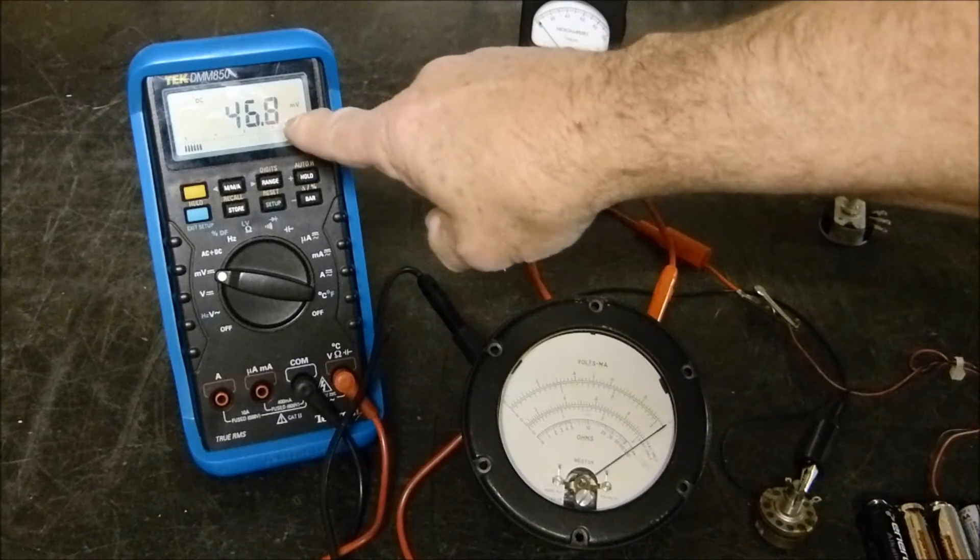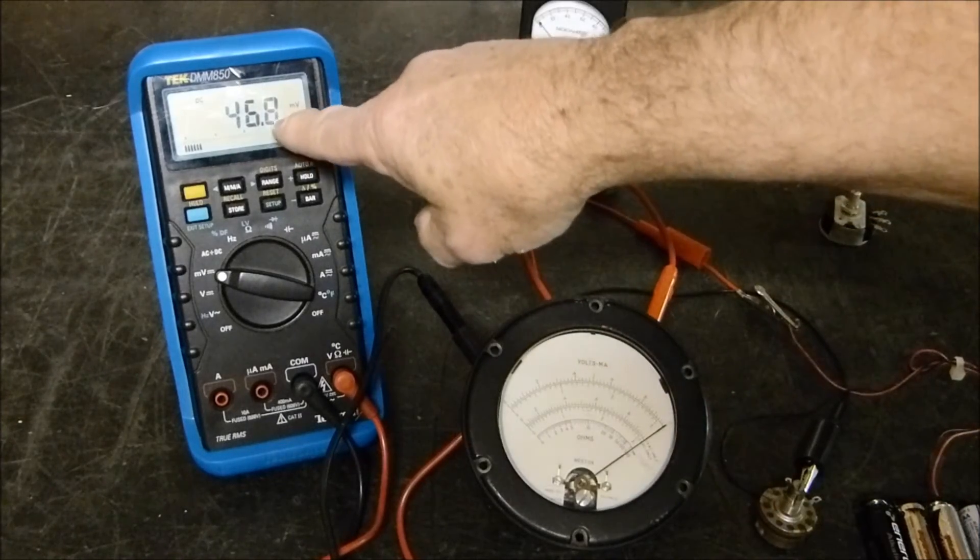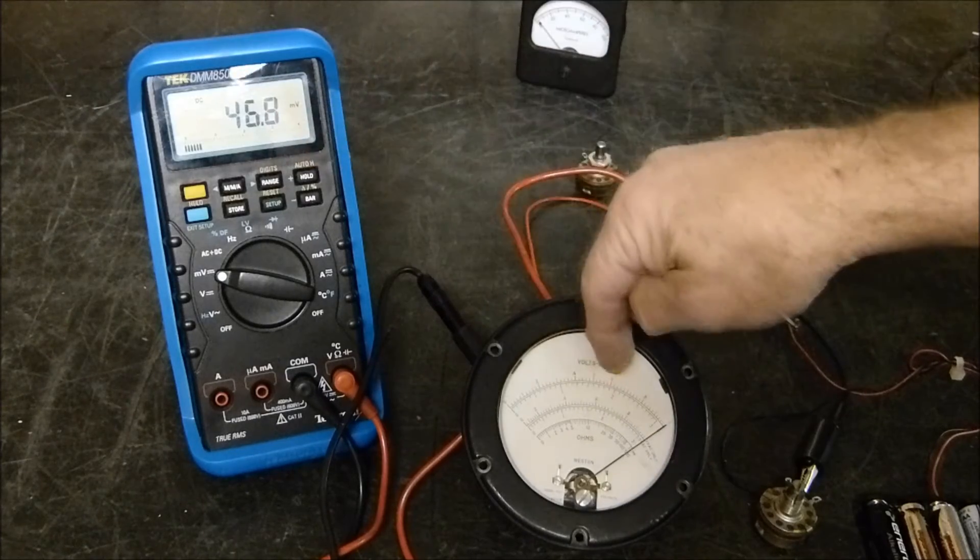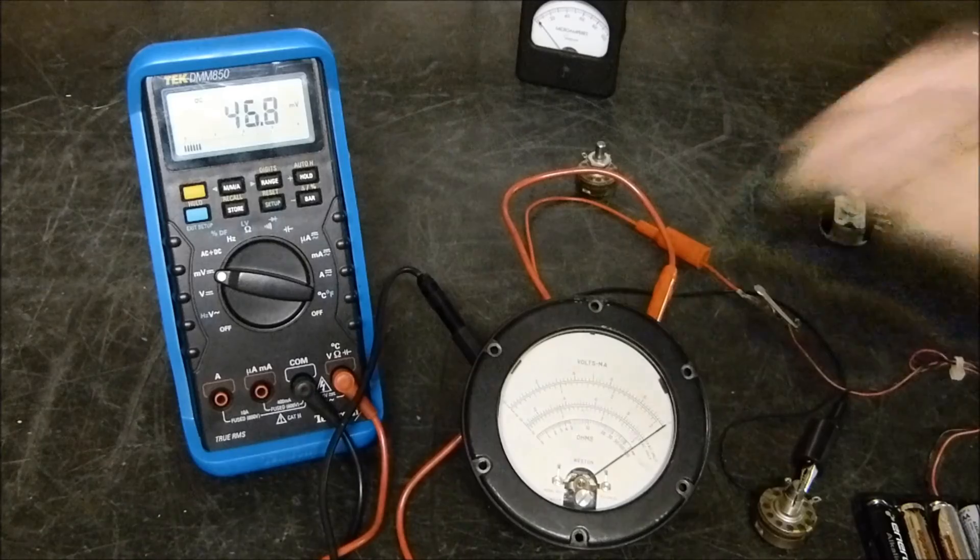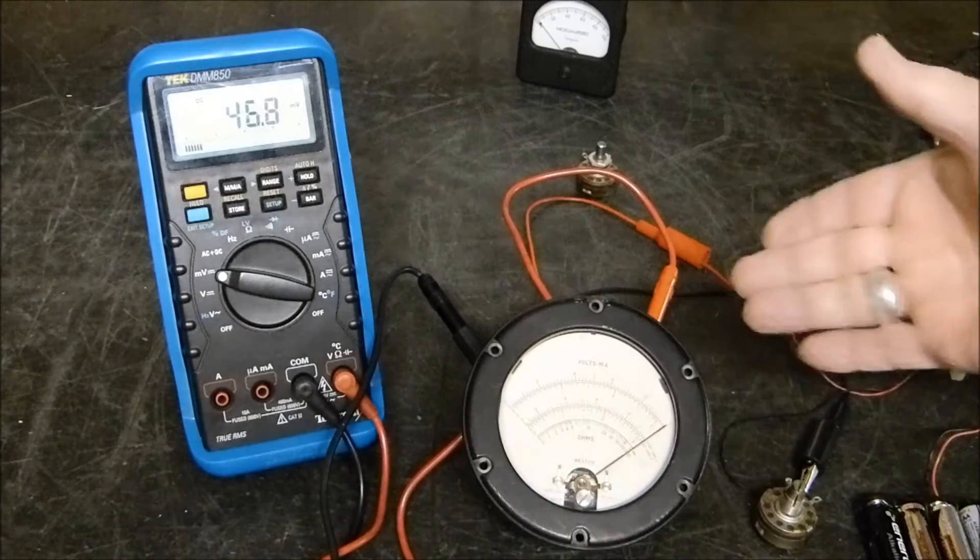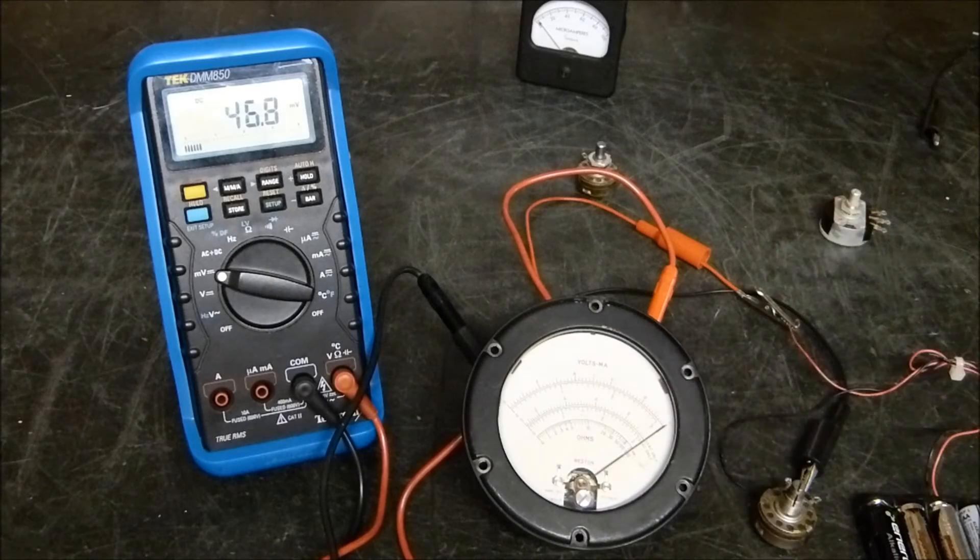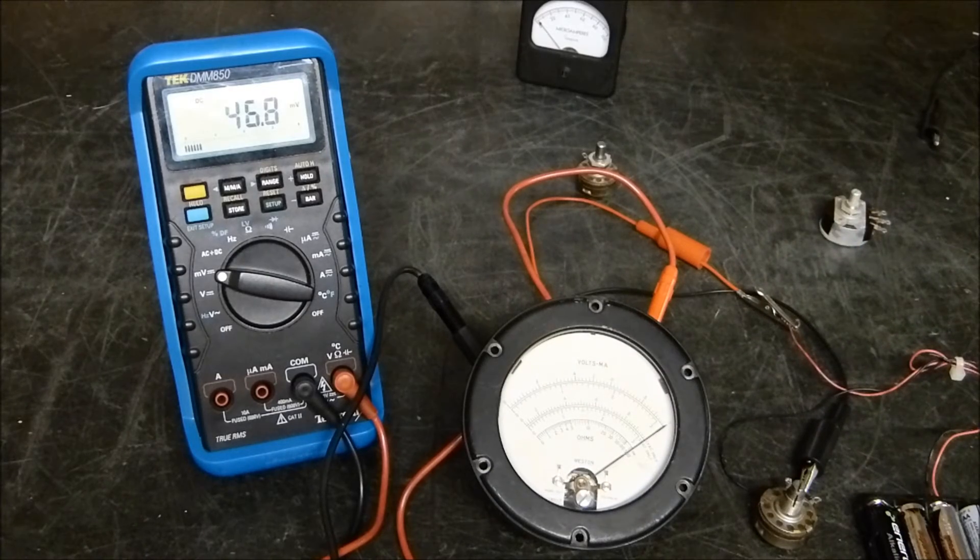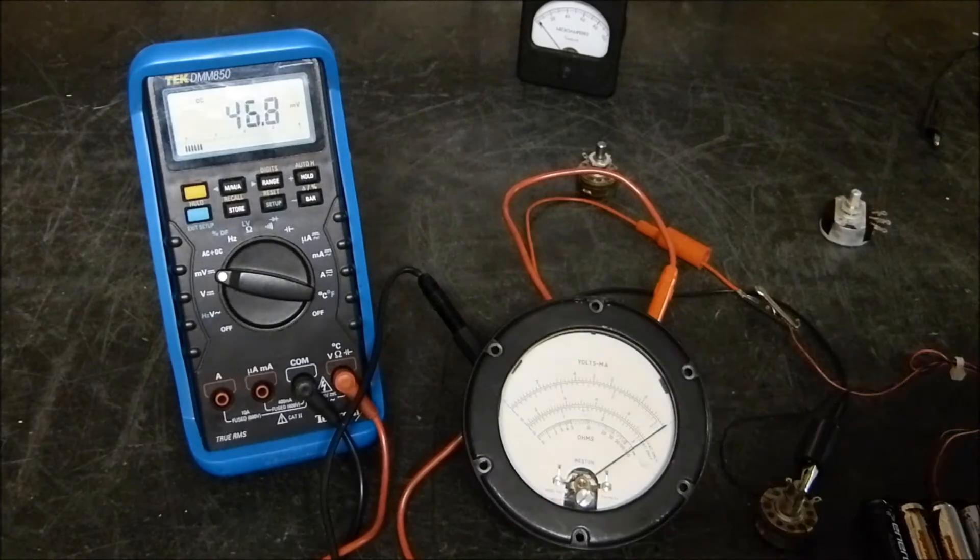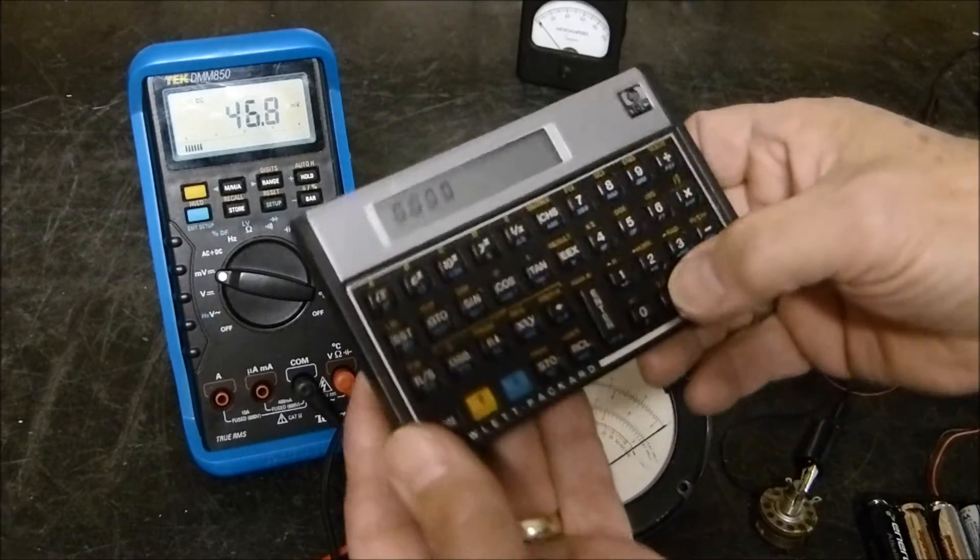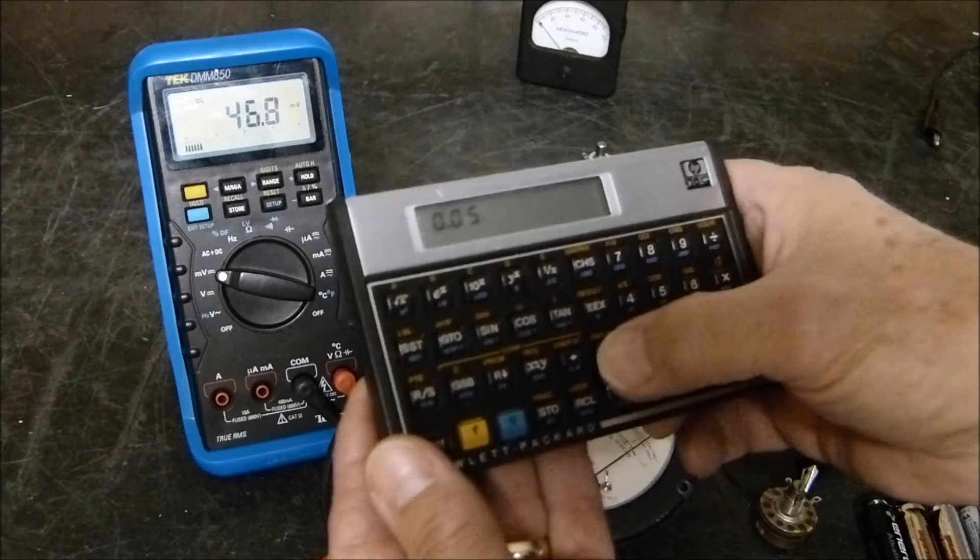It's stamped right there: FS equals 1 milliamp, full scale equals 1 milliamp. It's reading full scale and right there is the voltage that it takes to make it read full scale - that's 50 millivolts. It's not 46.8, so that makes it a 50 millivolt meter. If it's 1 milliamp and it takes 50 millivolts, then R equals E over I, E which would be 50 millivolts, which would be 0.05, over I which is 0.001. It's a 50 ohm meter.